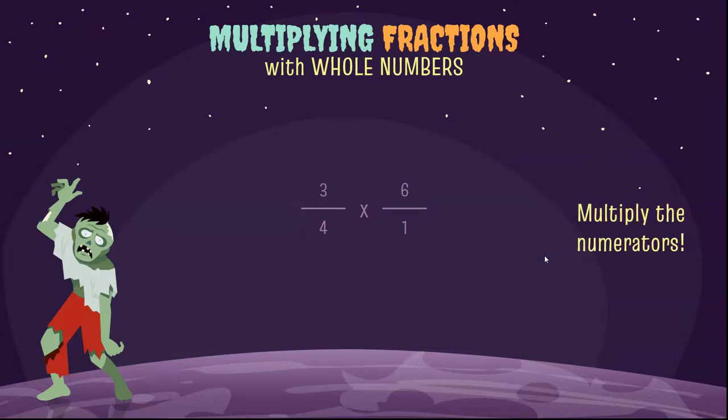Now we're going to multiply the numerators. So 3 times 6 is 18. Then we multiply the denominators. 4 times 1 is 4.